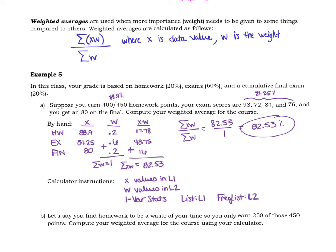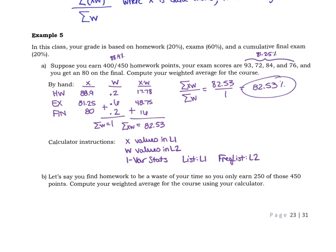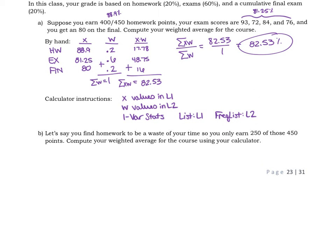All right, so what I want you to do is I want you to do this example again but do version b. So in this case, you don't think homework is valuable so you're not going to spend very much time on it. You're only going to earn 250 of those 450 points. Find your average if everything else stays the same.